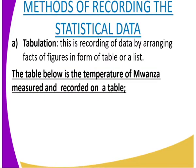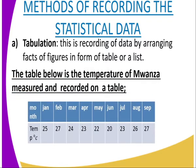One of the ways is tabulation. When we talk about tabulation, this is the recording of data by arranging the facts or figures in the form of a table or a list. For example, we have that image — the table shows the temperature of Mwanza measured and recorded. You can see the month and the temperature are given there. This recording in a table is what we refer to as tabulation.